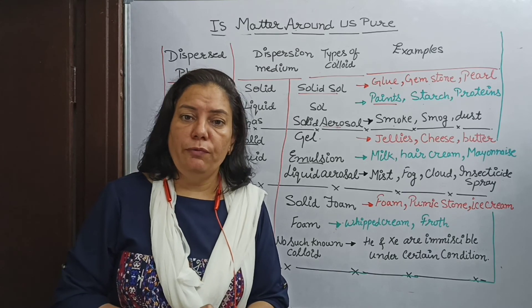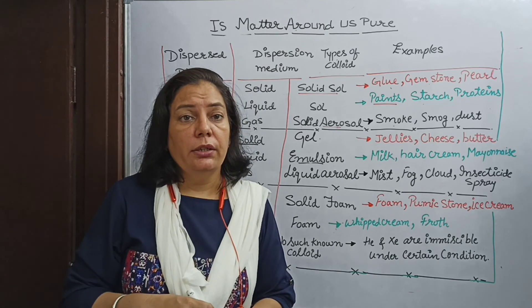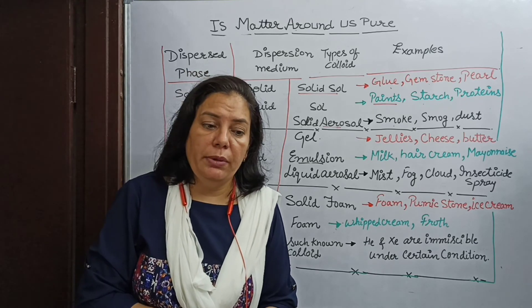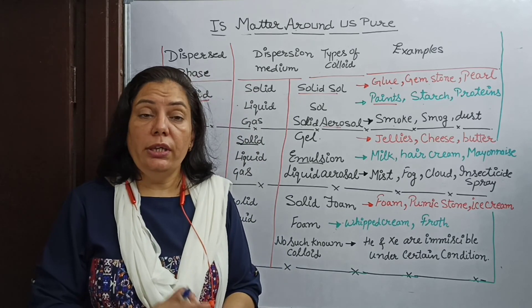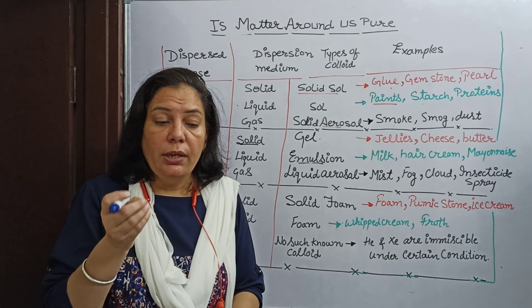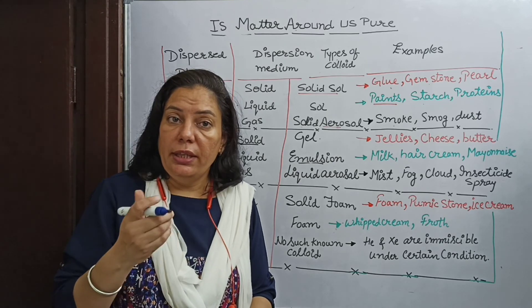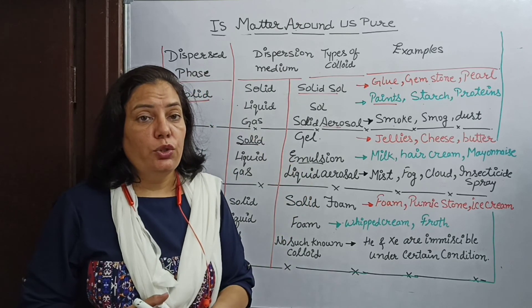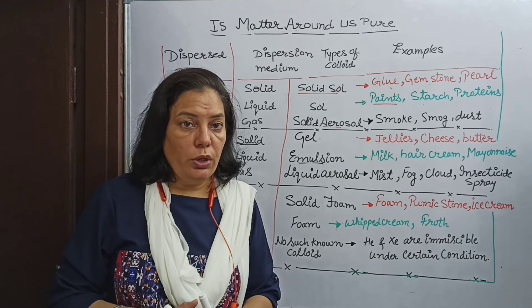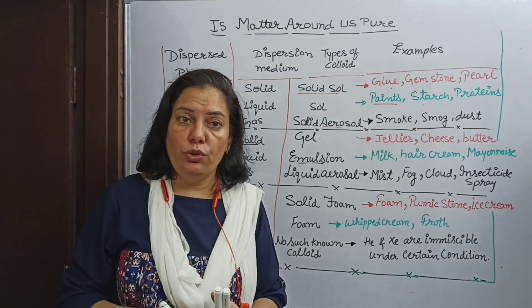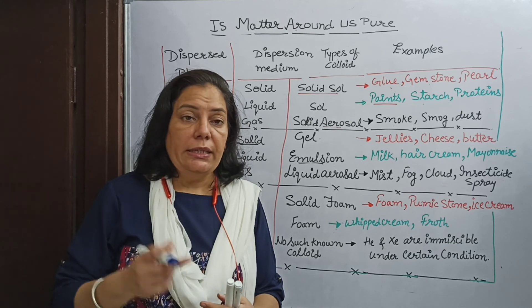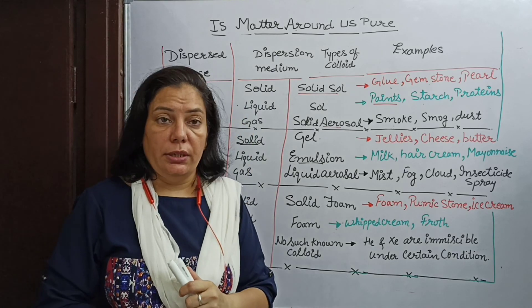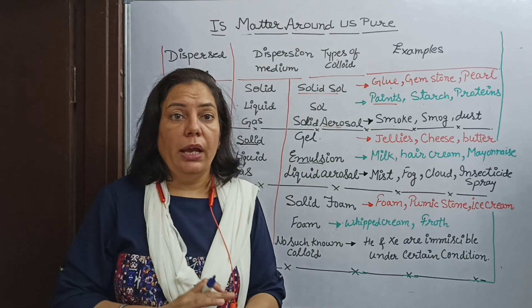Colloidal solutions have many applications in daily life. For example, colloidal iron is used for anemic persons as a remedial treatment, and they also have medicinal value. Even the cleansing action of soap — when you apply soap on dirty clothes — can be explained with the help of colloidal solutions. Today we learned about properties of colloidal solutions, their types, and the meaning of dispersed phase and dispersing medium. In our next video, we will learn more about suspension.